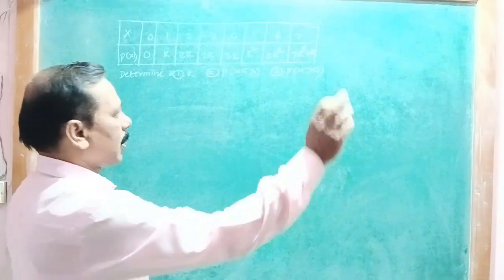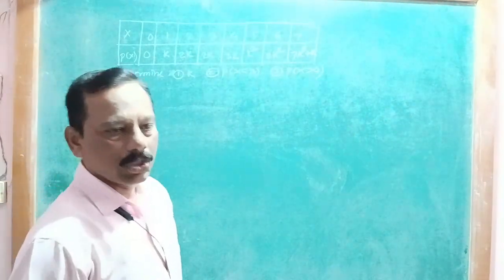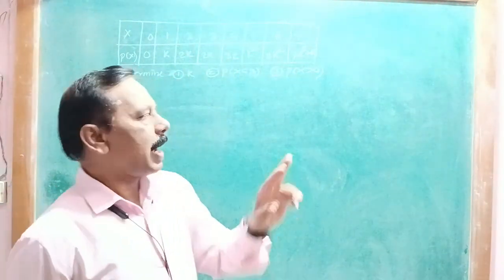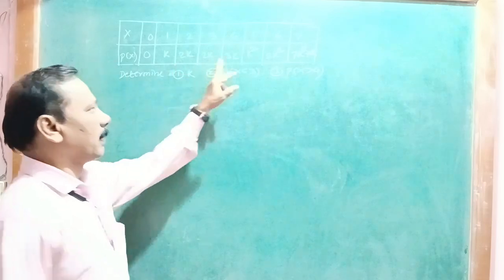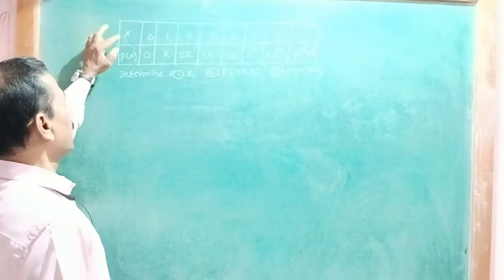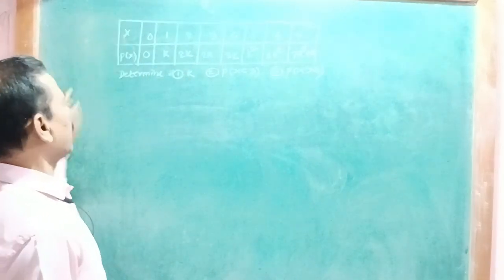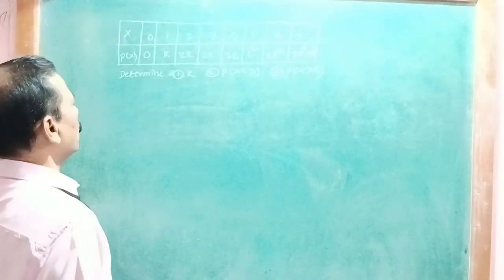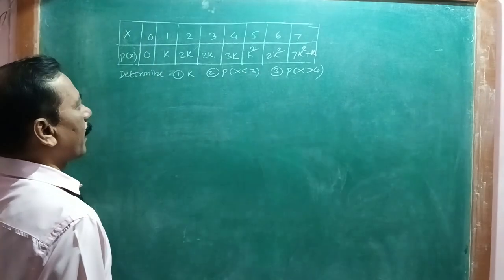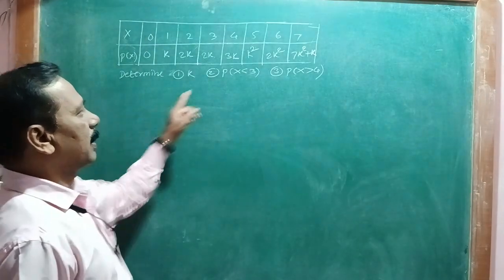Probability distribution is presented as a table. The chapter is called probability distribution. x takes values 0, 1, 2, 3, 4, 5, 6, 7.